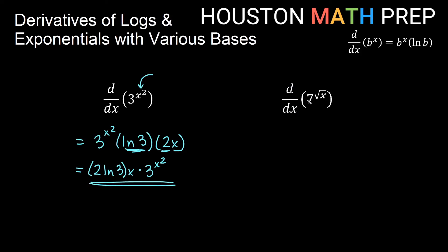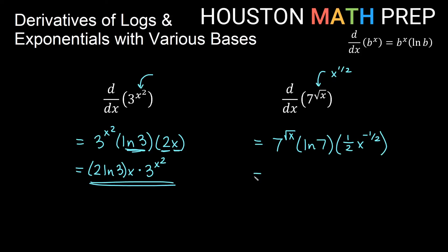The derivative with respect to x of 7 to the square root of x: first, the derivative of an exponential is itself, so we keep 7 to the square root x, times ln of the base — times ln of 7. The chain rule says multiply by the derivative of what's inside. Square root x is x to the 1/2, so by the power rule, 1/2 comes out front and the power goes down to negative 1/2. Putting it all together: 7 to the √x times ln(7) over 2 times √x.